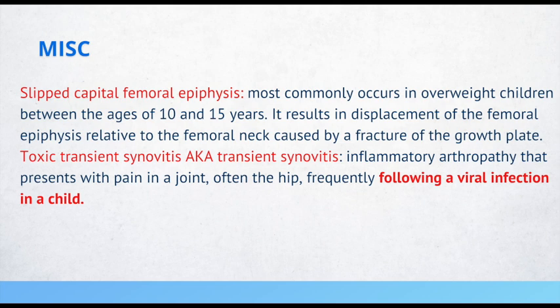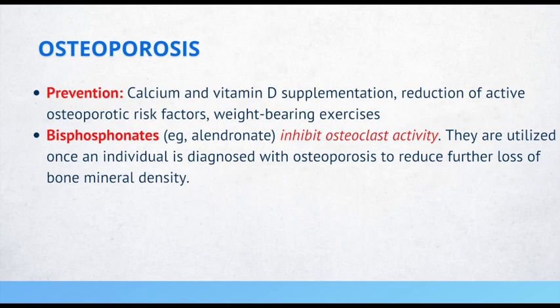We can prevent osteoporosis by giving calcium and vitamin D supplementation, reduction of active osteoporotic risk factors, and weight-bearing exercises. Modifiable risk factors include smoking and low BMI, which can be corrected through diet and lifestyle changes. Bisphosphonates such as alendronate inhibit osteoclast activity and are utilized once an individual is diagnosed with osteoporosis to reduce further loss of bone mineral density.